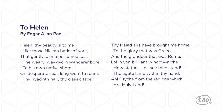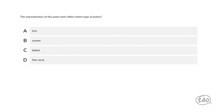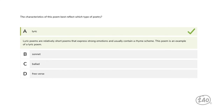Here's a poem by Edgar Allan Poe. The characteristics of this poem best reflect which type of poetry — lyric, sonnet, ballad, or free verse? It's an example of a lyric because it's a relatively short poem that expresses strong emotions and contains a rhyme scheme.